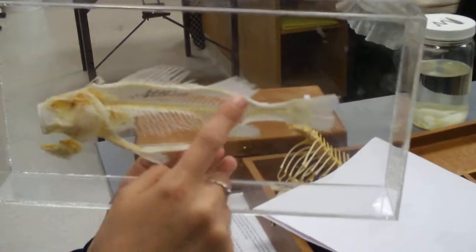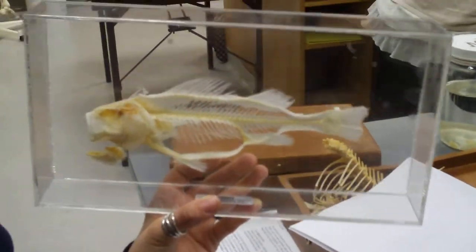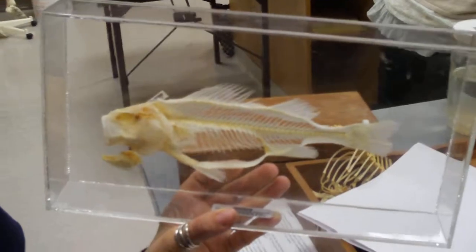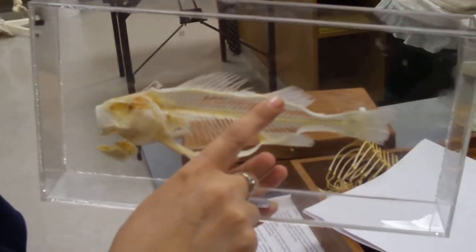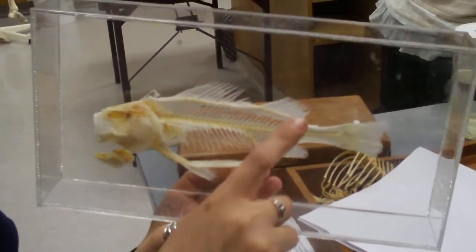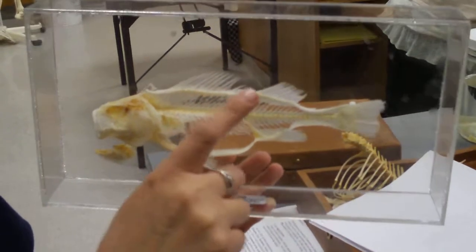And then you have your soft dorsal fin which is really soft and you can kind of rub it both ways and it doesn't do anything to you. And that has each one of those little rays is called lepidotrigia.